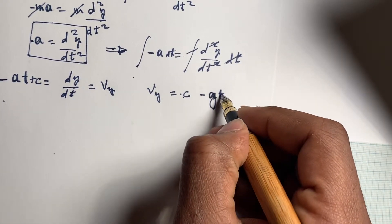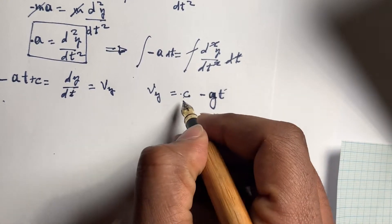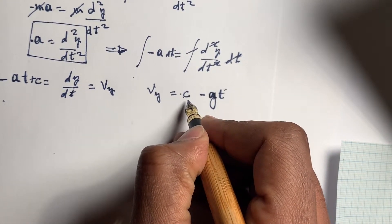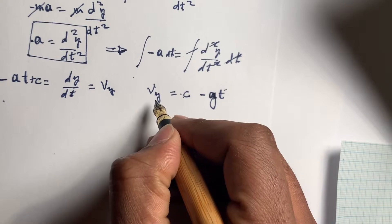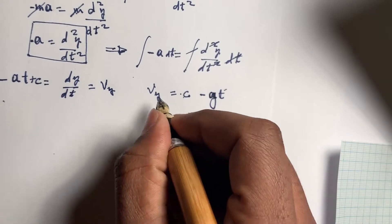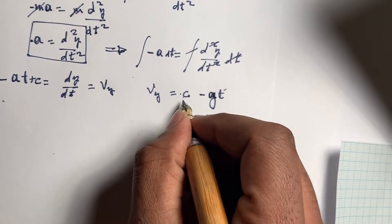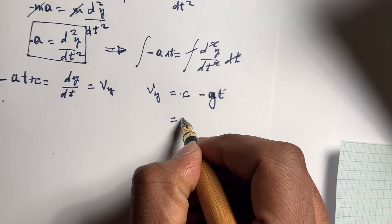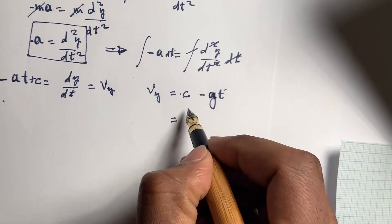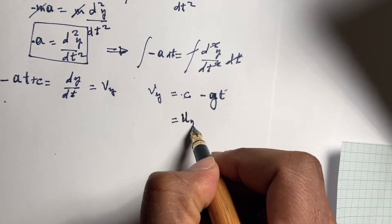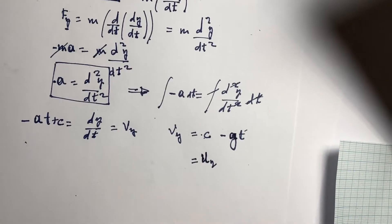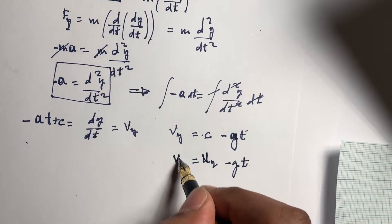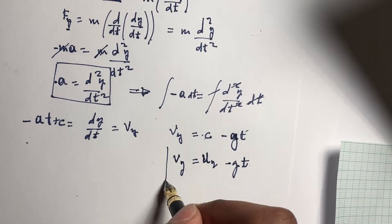At time equals zero, v_y equals c minus zero, which means c is equal to the initial velocity along y. So that's going to give us v_y equals u_y minus gt.